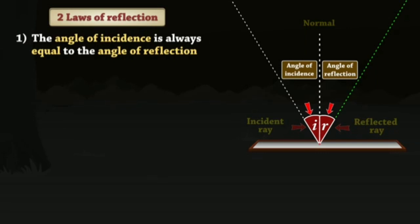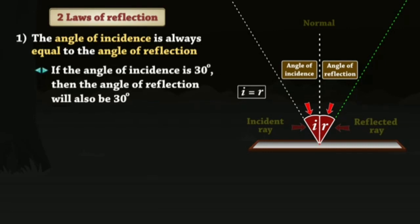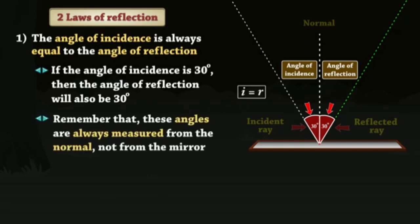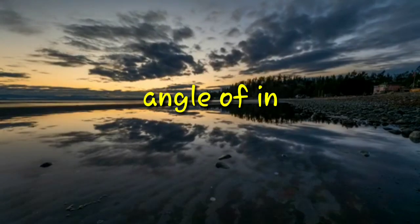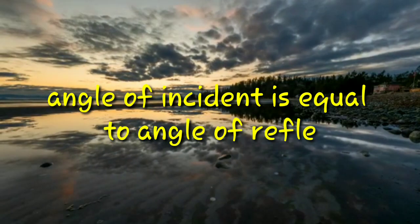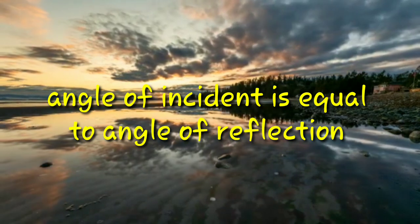The angle of incidence is always equal to the angle of reflection. Small letter 'i' indicates angle of incidence and small letter 'r' indicates angle of reflection. Angle of incidence is equal to angle of reflection.